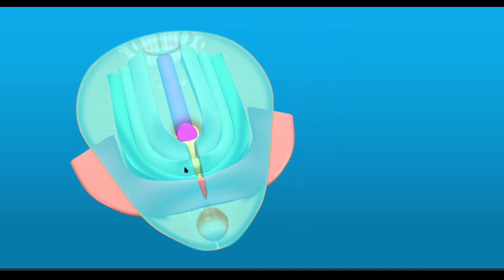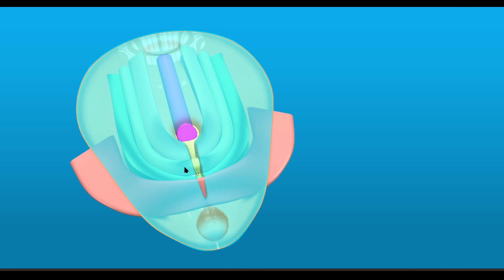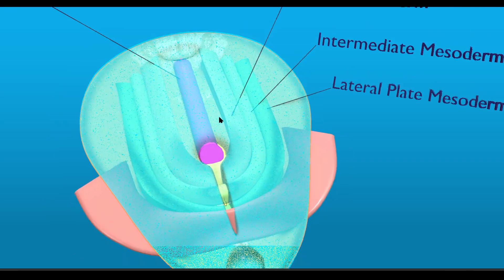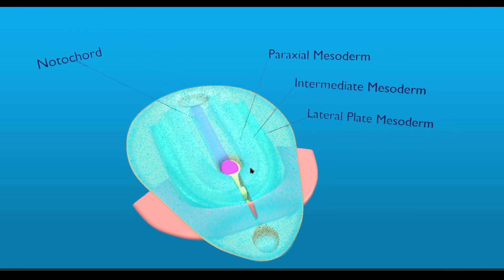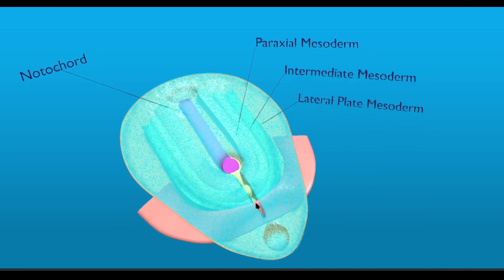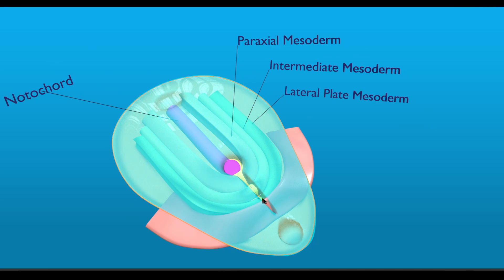Extra embryonic mesoderm is thought to be formed from the hypoblast cells during the third week of development, but there is also some contribution from these ingressing cells during the third week. What you can understand from this diagram is that the medial most component of the intraembryonic mesoderm — the notochord — passes from the cranial most part of the primitive streak and primitive node, while the lateral most part is contributed by cells that ingress from the caudal most part, such as the lateral plate mesoderm. The primitive streak and primitive node are the real guiding stars during the process of gastrulation.